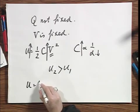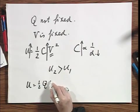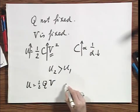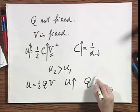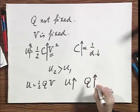U is also one-half QV. U goes up. V remains the same.